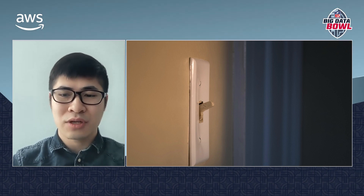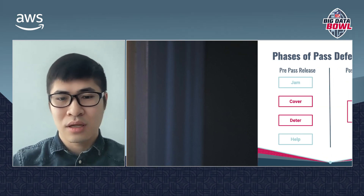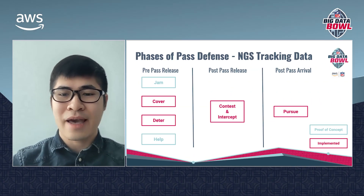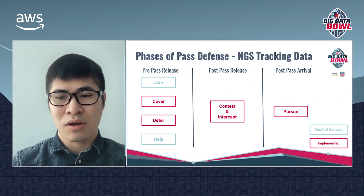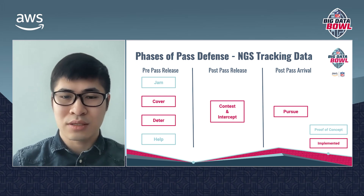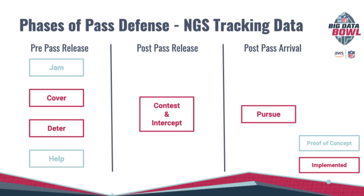Next-gen stats tracking data flips that on its head. We can finally turn the lights on and illuminate the defense. No longer in the dark are the things that happen off the ball or even before the pass is released. Not only can we learn about all the players in a play, but also about previously unexplored aspects like jamming, pre-release coverage, and deterrence.